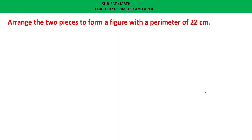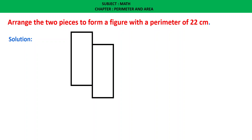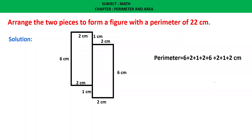Arrange the two pieces to form a figure with a perimeter of 22 centimeters. Solution: the sides measure 6, 2, 1, 2, 6, 2, 1, and 2 centimeters. Therefore, perimeter equals 6 plus 2 plus 1 plus 2 plus 6 plus 2 plus 1 plus 2 equals 22 centimeters.